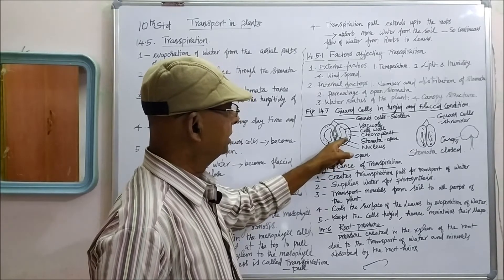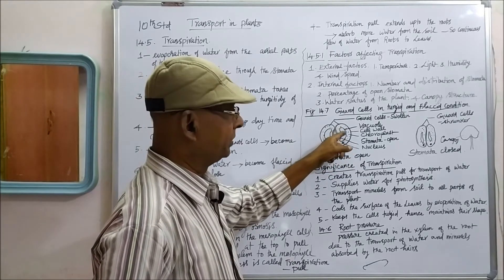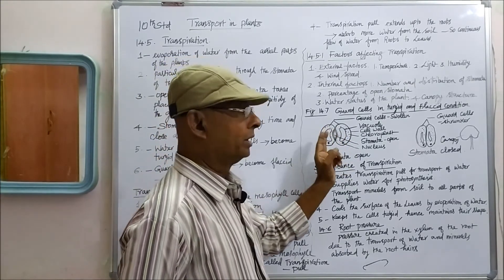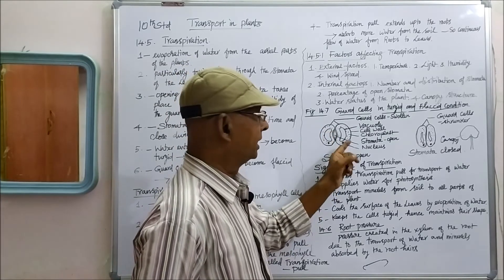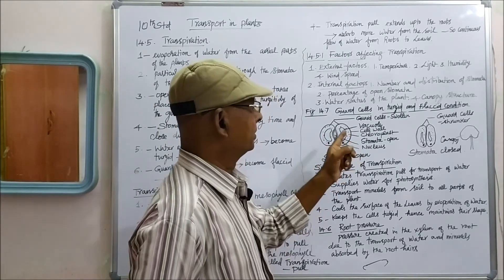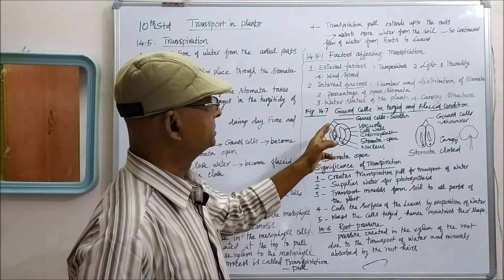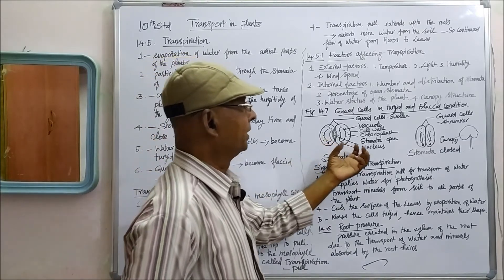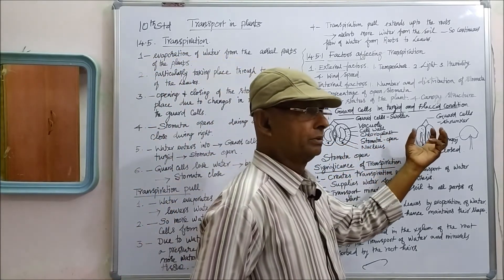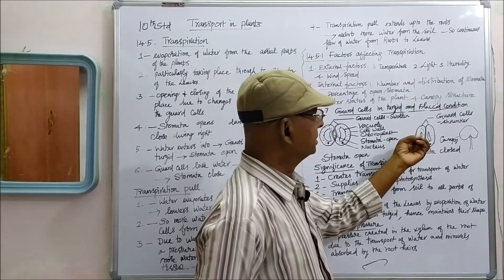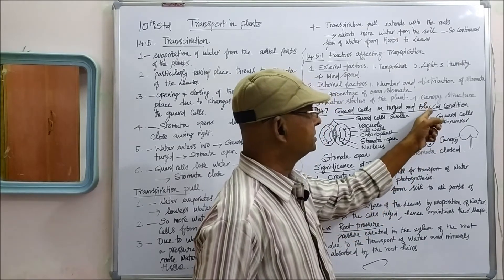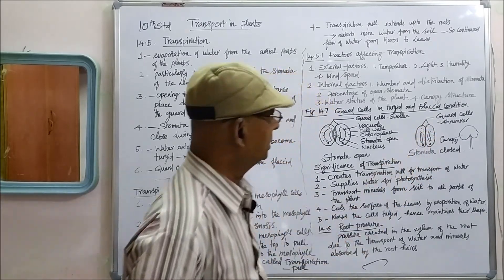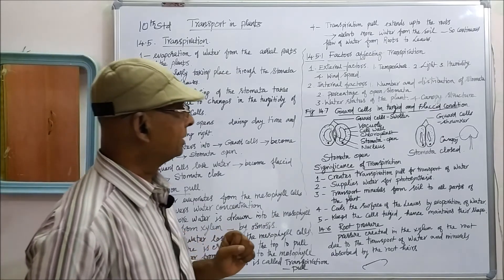In each stoma, there are two bean-shaped guard cells. In each guard cell, you can see a nucleus and chloroplast. At the center, there is a large vacuole. When the guard cells are in turgid condition, that will make the stomata open. When no water is present in the guard cells, they become flaccid and the stomata will be closed. That is about the structure of the stomata.